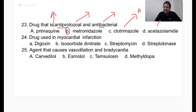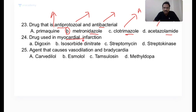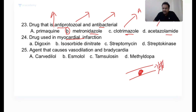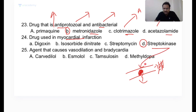Drug used in myocardial infarction: blood vessels are completely blocked, causing cardiac cell death. The treatment involves dissolving the clot using fibrinolytic (thrombolytic) agents. These include streptokinase, urokinase, alteplase, reteplase, and tenecteplase. Digoxin is used for congestive heart failure or arrhythmia; isosorbide for angina; streptomycin for TB — none of these are fibrinolytics.